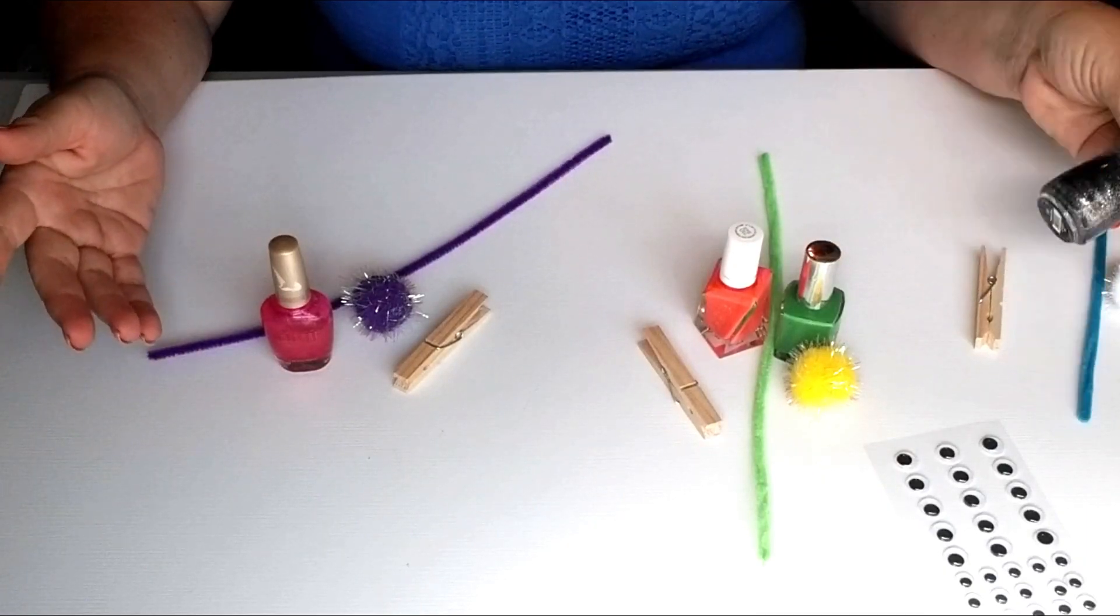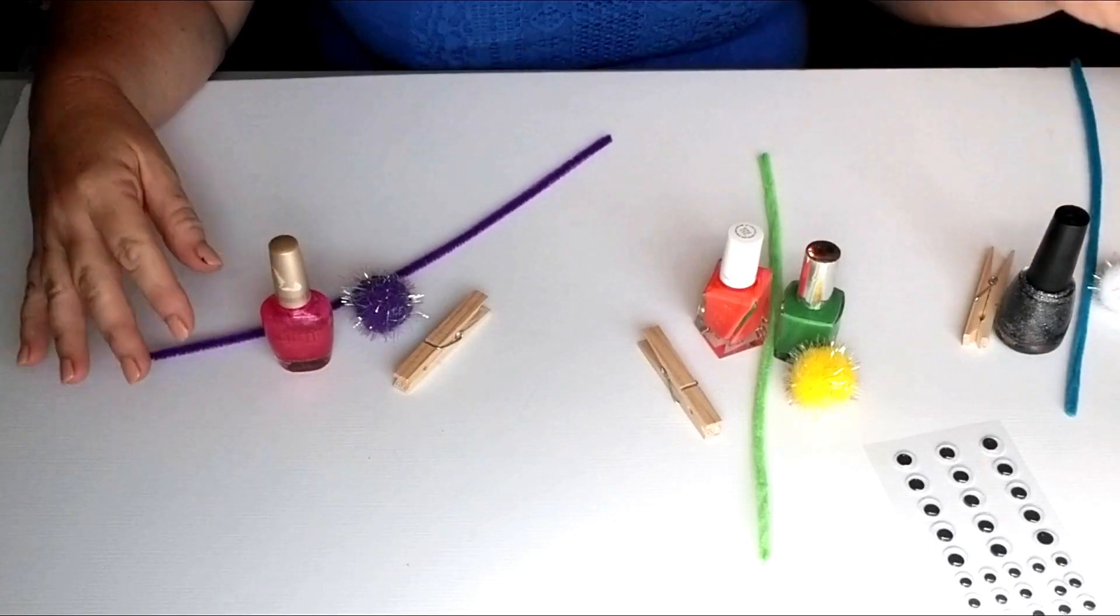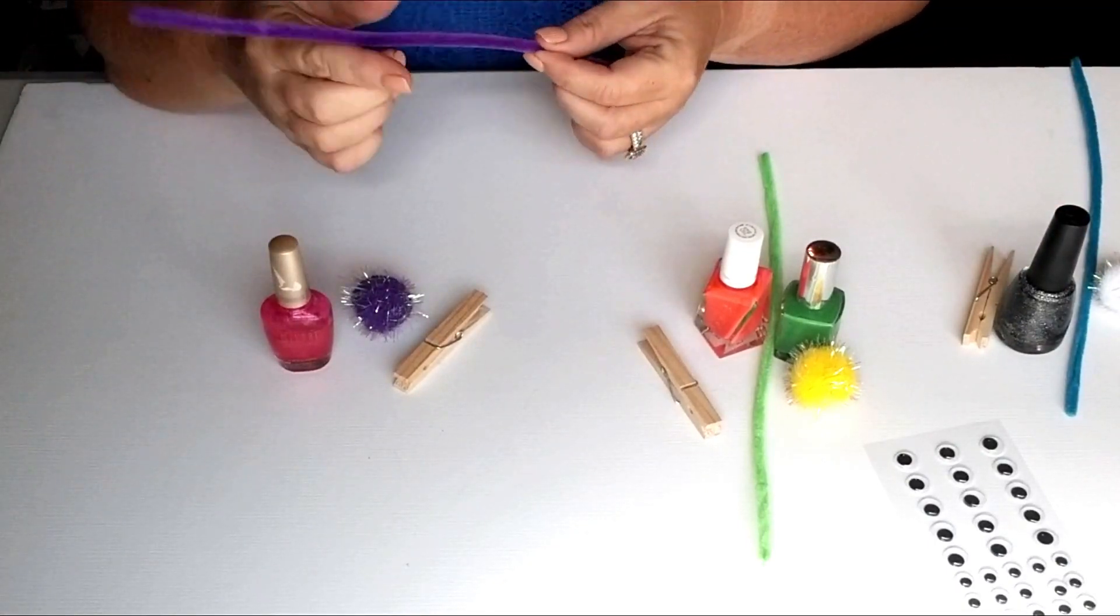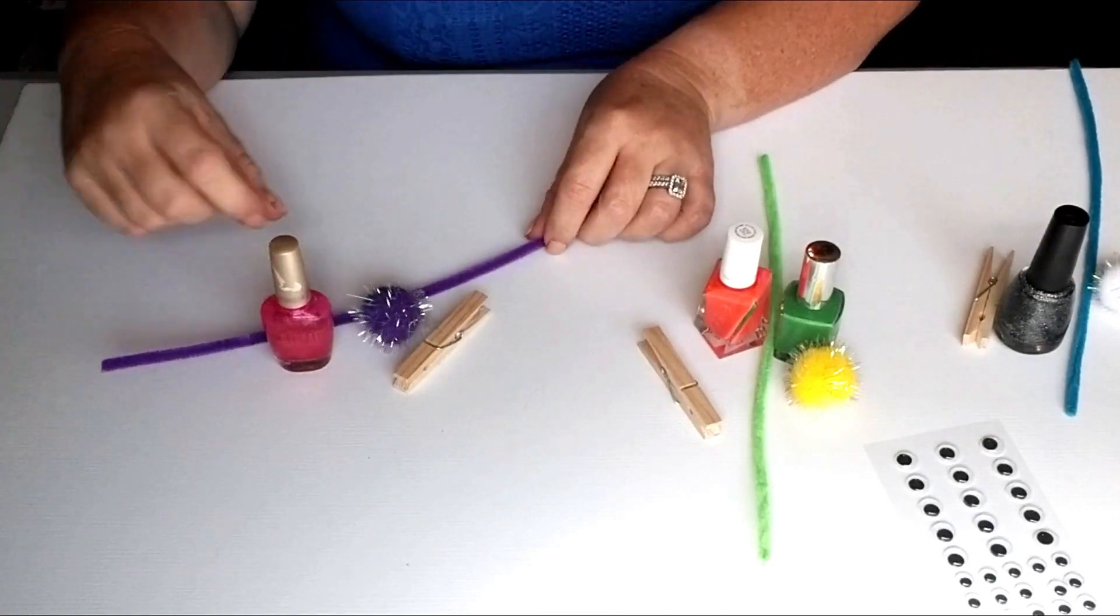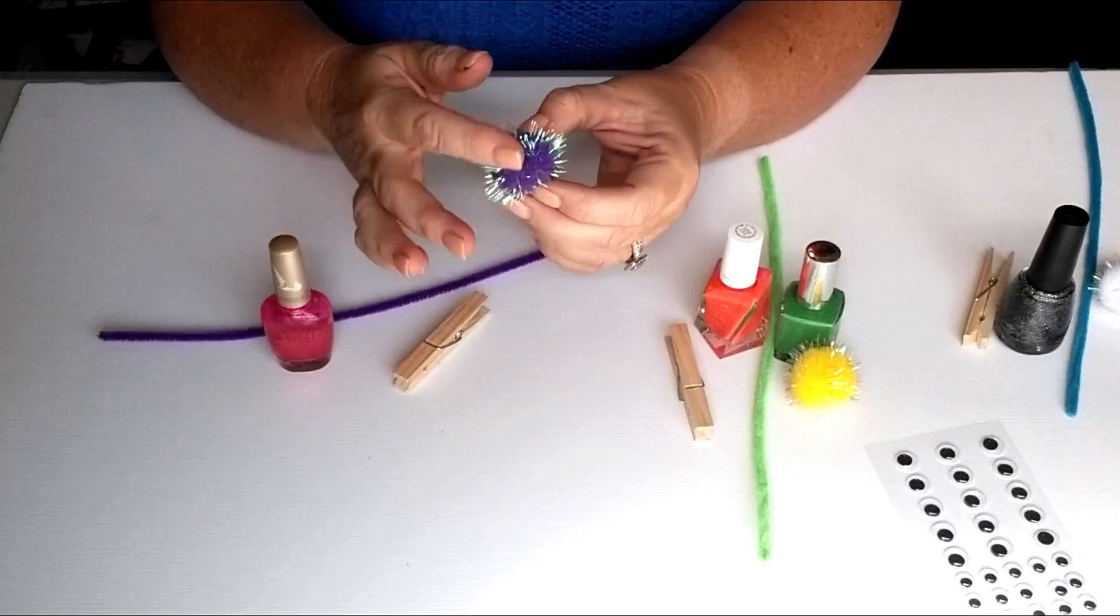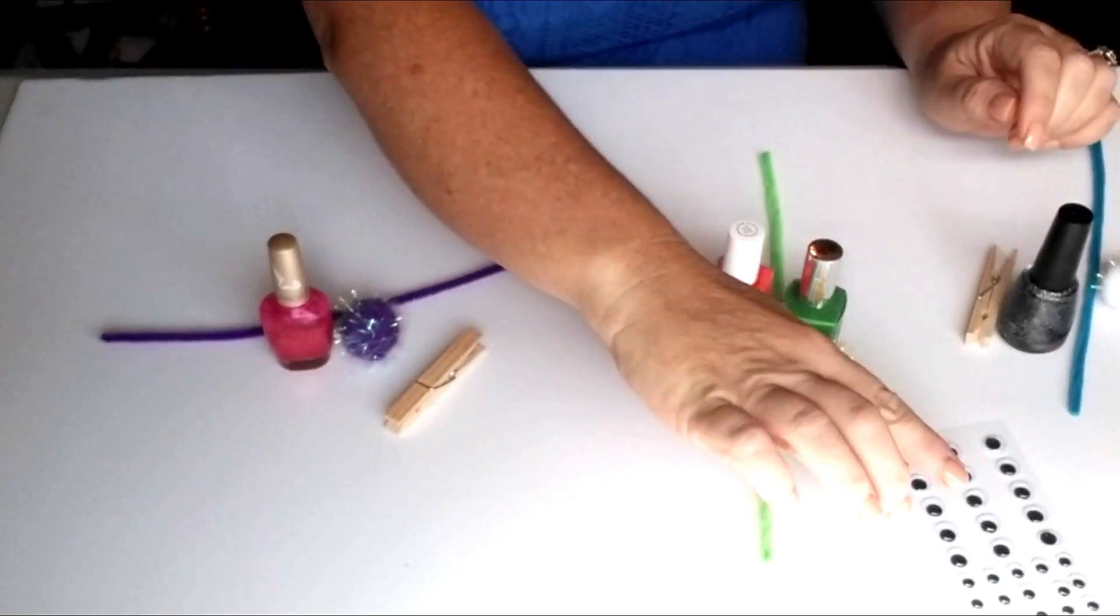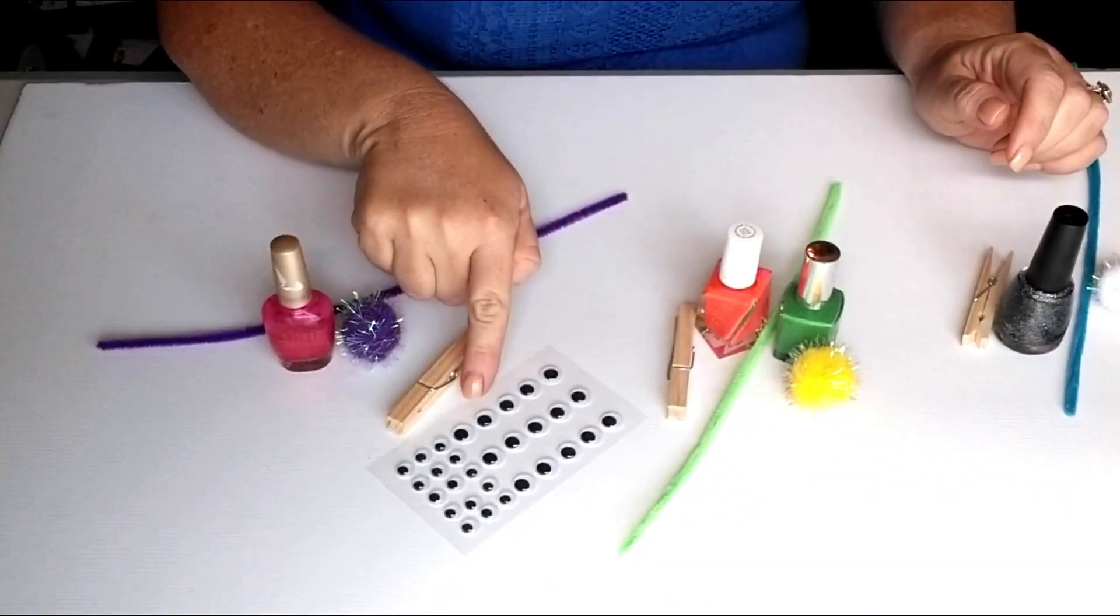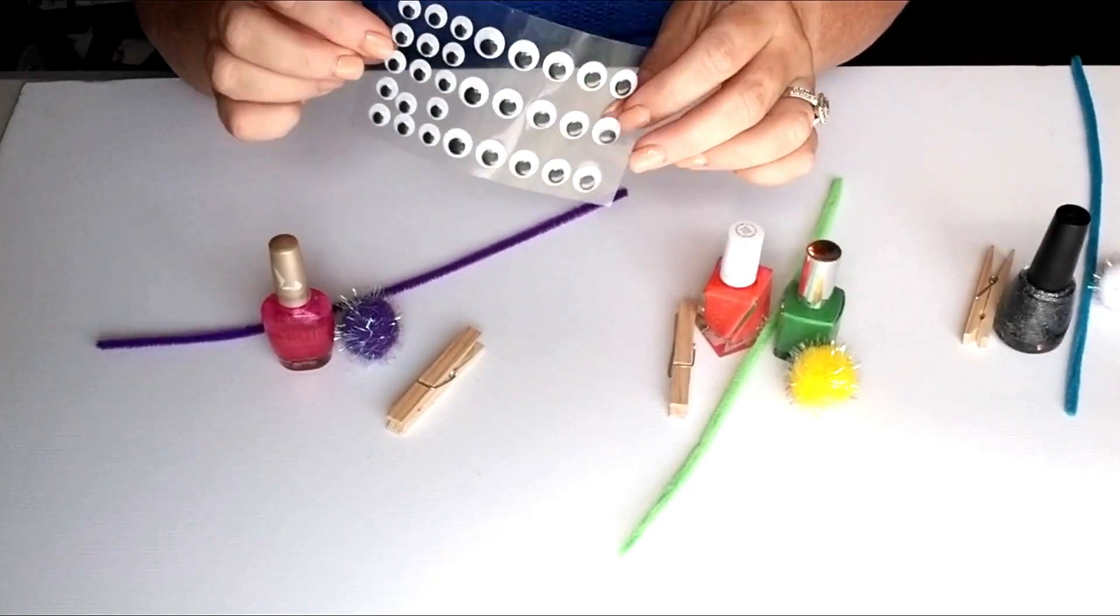So here are the supplies you're going to need. Some fingernail polish, some colorful pipe cleaners, some fuzzy balls for the heads, and some clothespins. And of course you can't do it without some funny looking googly eyes to put on them too.